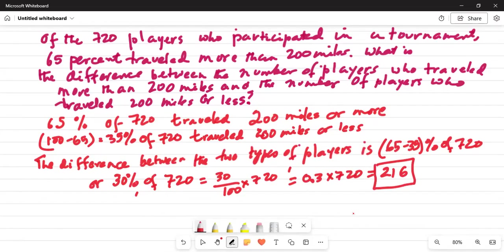So, what does it mean? It means 216 players additionally are on top of the people who traveled 200 miles or less. So, 216 is the additional number of players who traveled 200 miles or more to join the tournament. Or, in other words, the difference between those who traveled 200 miles or more and those who traveled 200 miles or less is 216. That is the answer we are looking for.